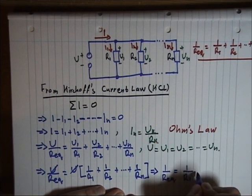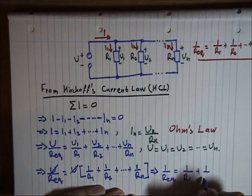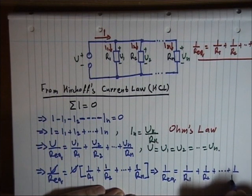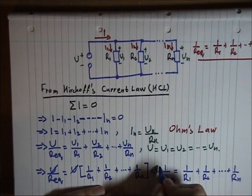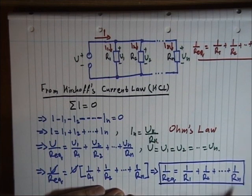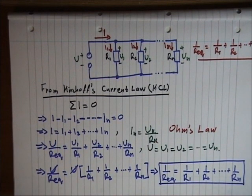of 1 over R1 plus 1 over R2 plus 1 over Rn. And this is how we find the equivalent resistance of a parallel topology.